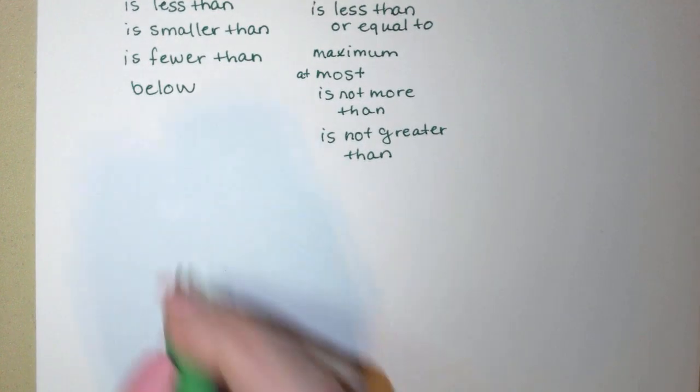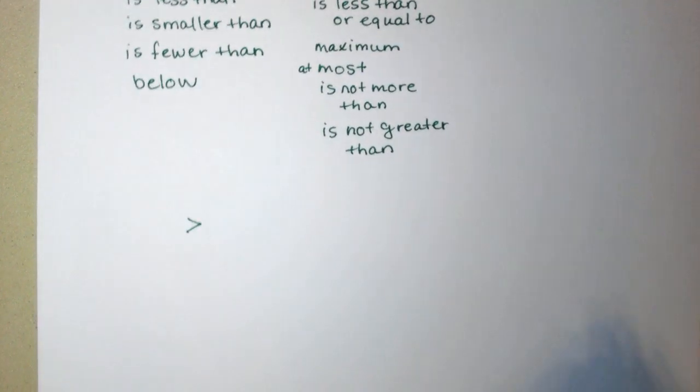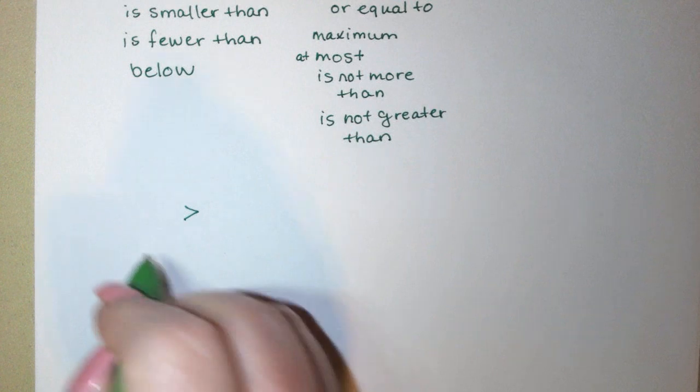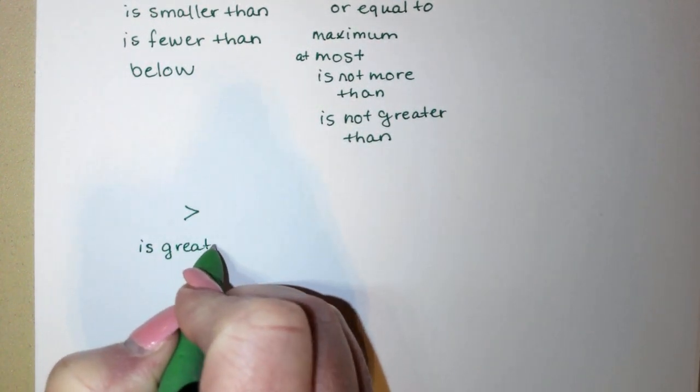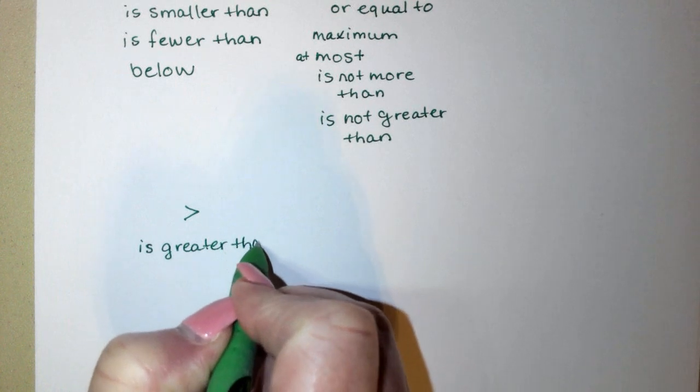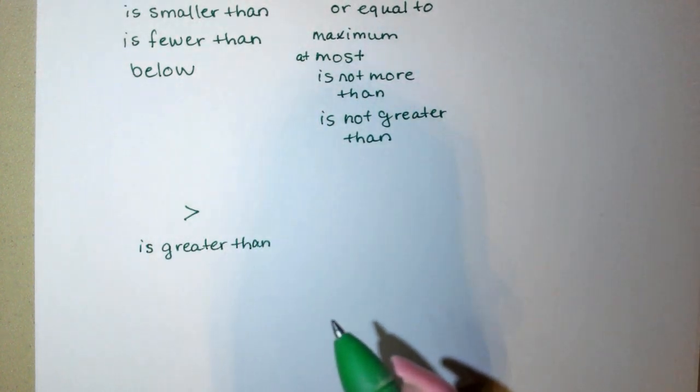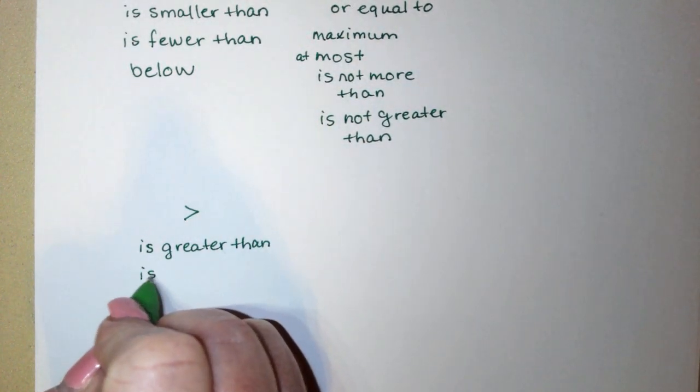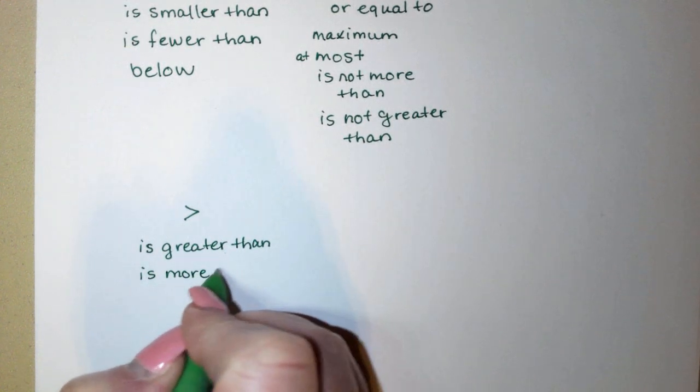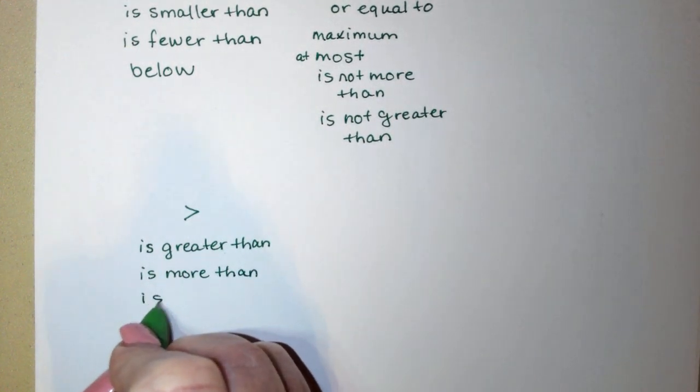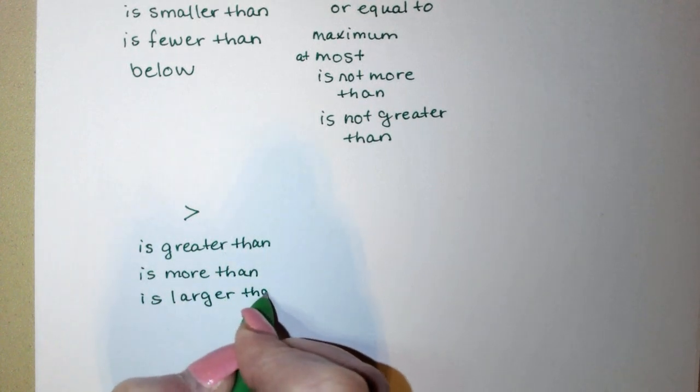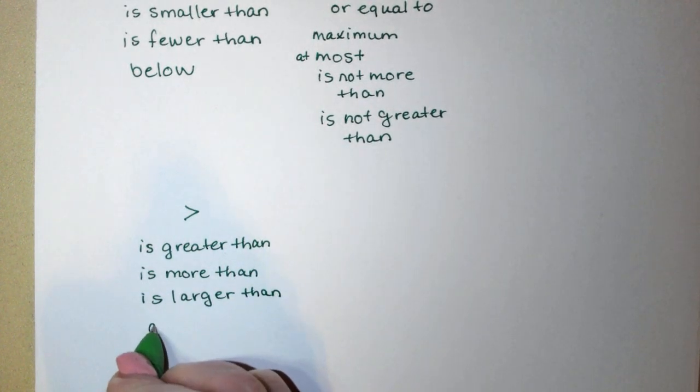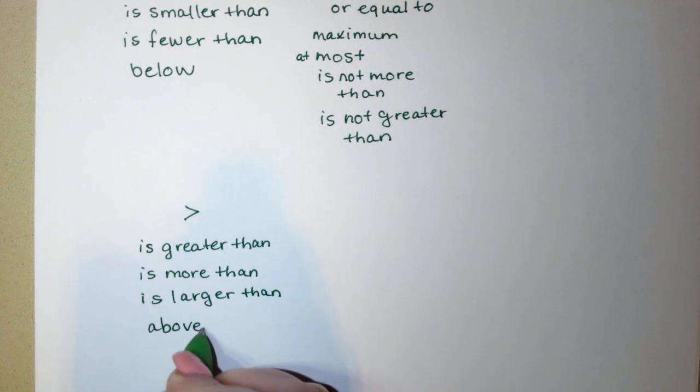Now, we could also have this symbol right there. This one means is greater than, or we could say is more than, or is larger than, or above. All of those could represent greater than.